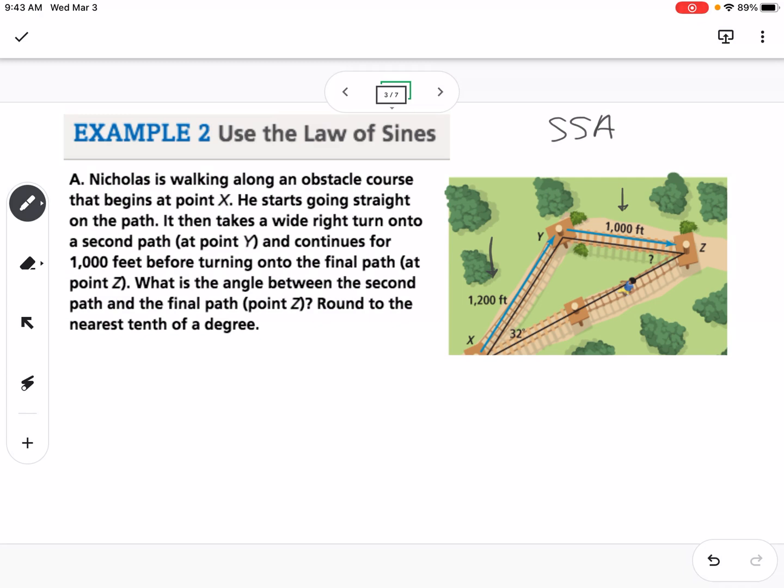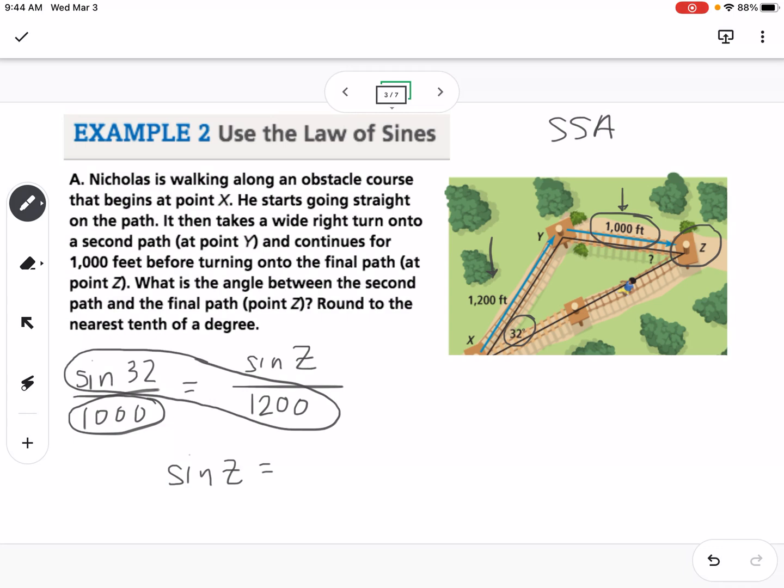So what we would do here is we're going to use Law of Sines. So notice that we have angle 32 opens up to side 1,000, so we can set that up as sine of 32 over 1,000, and then we're trying to find the sine of, so we're trying to find angle Z. So we're going to find the sine of Z over 1,200. So then what we're going to do is you're going to make sure that your calculator is set to degree mode, or if you're in Desmos, you're going to go up to the graph settings and make sure it's set to degrees, and then we're going to cross multiply and divide. So we're going to take 1,200 times sine of 32, divide it by 1,000, and we're going to get that sine of Z is equal to a decimal that we're going to kind of just leave because we want to round at the very end. But we get, I don't need parentheses there, so we get 0.6359.